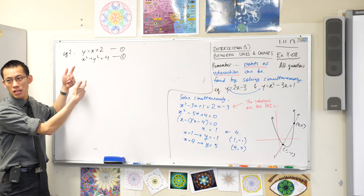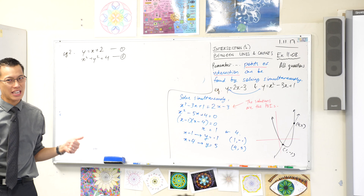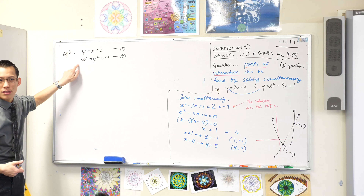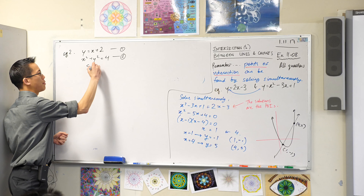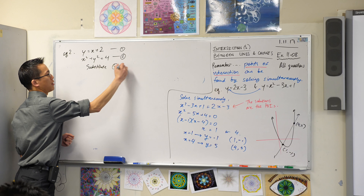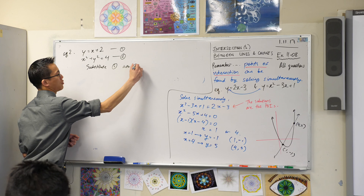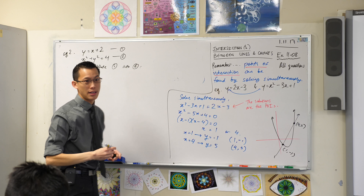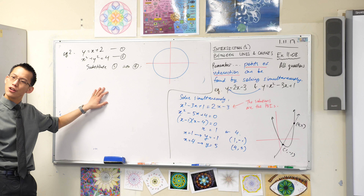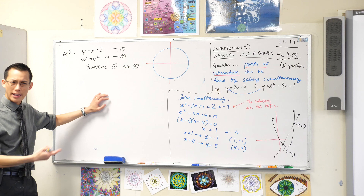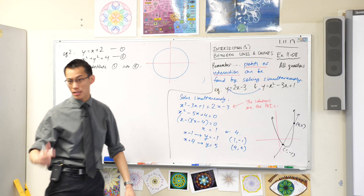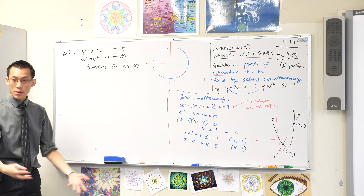Elimination happens to be only really useful in a very small number of cases — where the number of x's is exactly the same, or the number of y's is exactly the same. That actually doesn't happen very frequently. For that reason, it's actually the other primary method that gets used 99% of the time. It's not solved by elimination, it's solved by substitution.